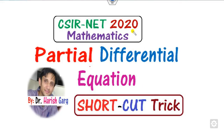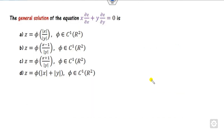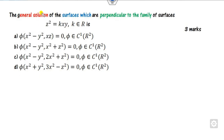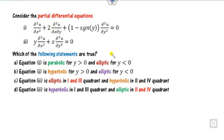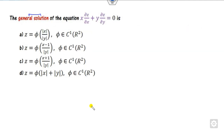Hello everyone, welcome to the next lecture on the CSNA 2020 Mathematics Solution. Today we will discuss how you can solve the partial differential equations which were asked in the CSNA 2020, and we will see some shortcut tricks. There are four questions: the first is finding a general solution of a PDE, the second involves a general solution perpendicular to a family of surfaces, the third requires finding the complete integral and a particular solution passing through a given curve, and the last one is classifying a PDE as parabolic, hyperbolic, and so on.